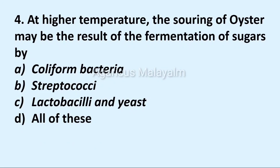Fourth question: at higher temperature, the souring of oyster may be the result of the fermentation of sugar by. Option A: coliform bacteria. Option B: streptococci. Option C: lactobacilli and yeast. Option D: all of these. Correct answer: Option D, all of these.